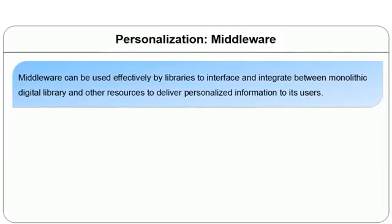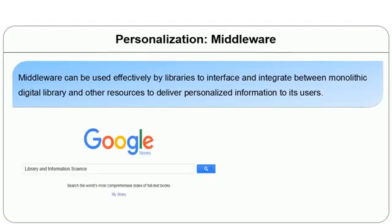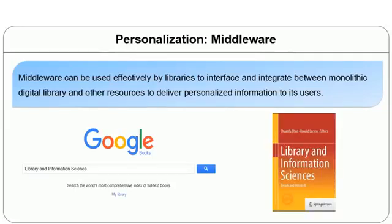For example, books.google.com is a service offered by Google on its digital book collections. If you request an API from Google, you can use the same API in your own website. The API is a program code developed by Google for searching books — you can customize it for library science books, put it in your website, and when people click on it, it will only show library science books from books.google.com.